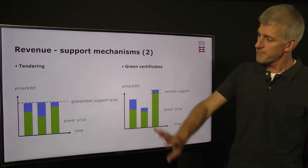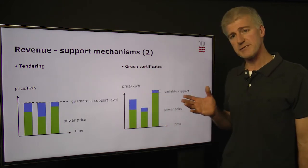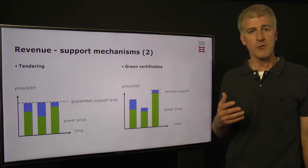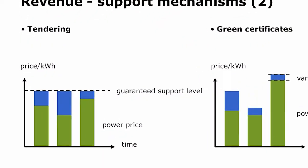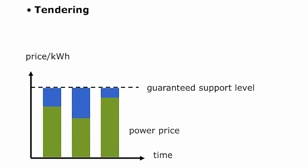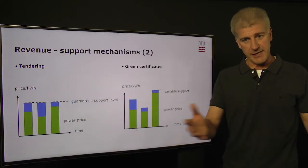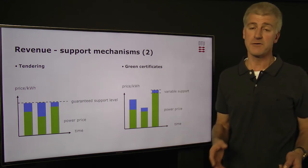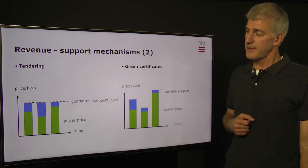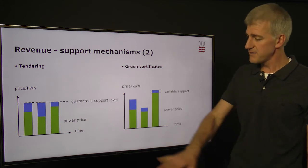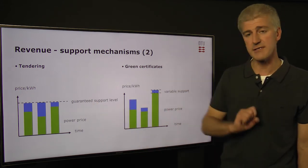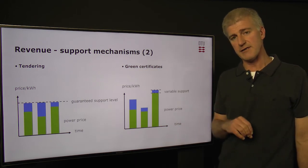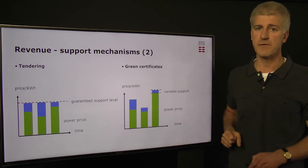Two more support mechanisms. This one is called tendering. An individual developer will bid for a specific project, stating that they need a certain number of euros per megawatt hour for the project to be feasible for their business case. An authority will then look at the various bids received and make a choice depending on certain criteria — it could well be just on price — and award the contract to a developer to build the wind farm. That developer, when the wind farm is operating, will get this guaranteed support level. So it's a little bit like the feed-in tariff, but with a large element of competition at the start.